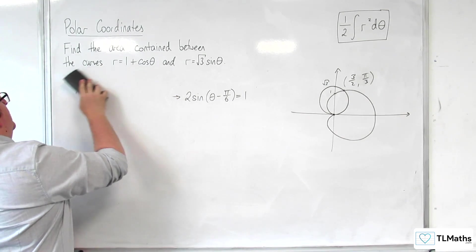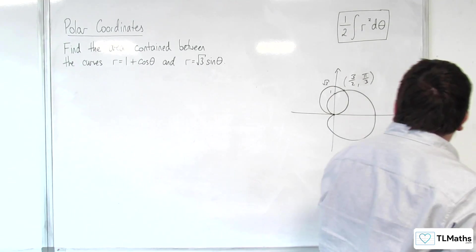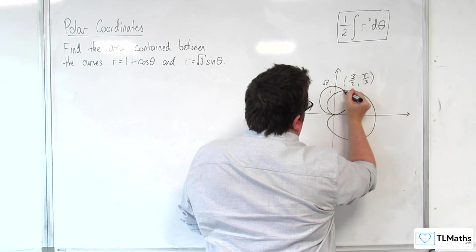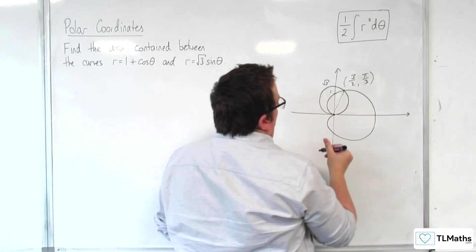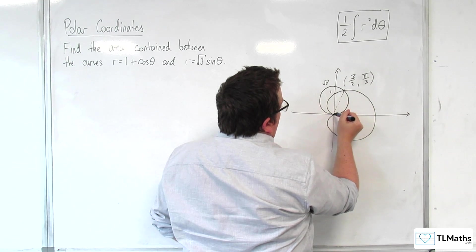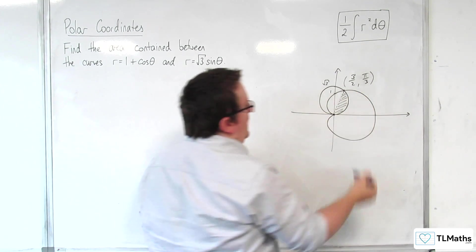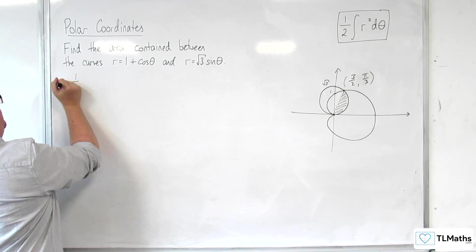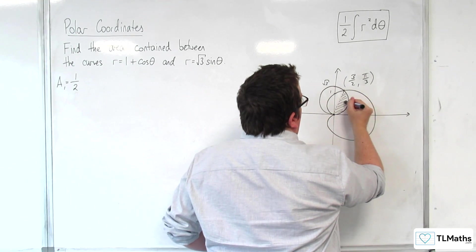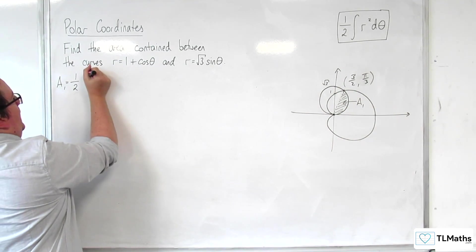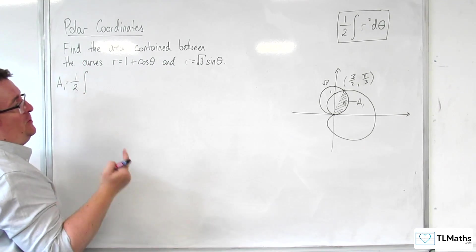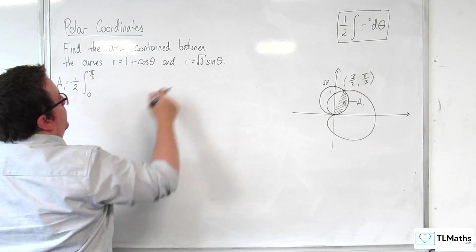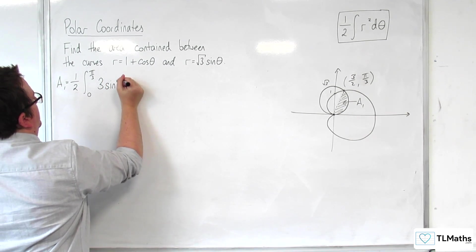Now I'll work out the required area. Area 1, A1, is the area swept by the circle between theta equals 0 and pi over 3. So A1 equals one half times the integral from 0 to pi over 3 of r squared, which is (root 3 sine theta) squared, giving 3 sine squared theta, d theta.